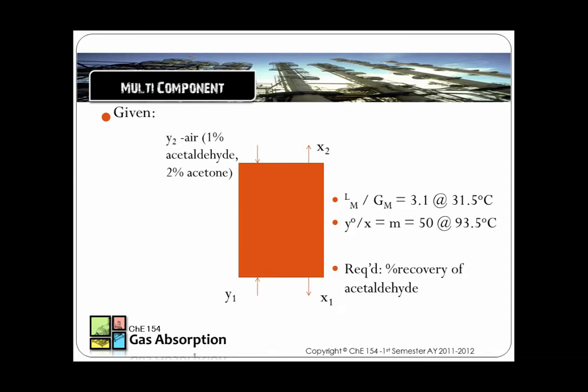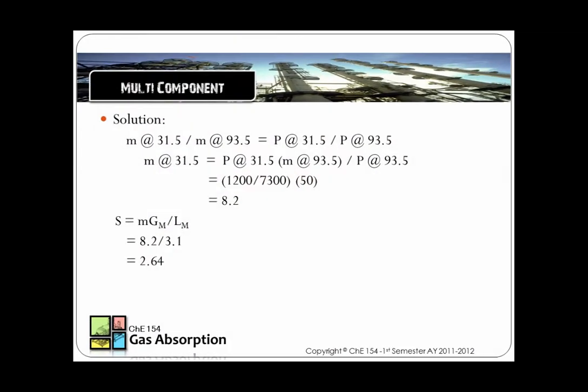In order to solve this problem, first, the Y0 over X at 31.5 degrees Celsius must be solved. This is solved by using ratio and proportion using the partial pressure at 31.5 degrees Celsius and 93.5 degrees Celsius. The Y0 over X that is computed is 8.2. This will be used to solve for the stripping factor.